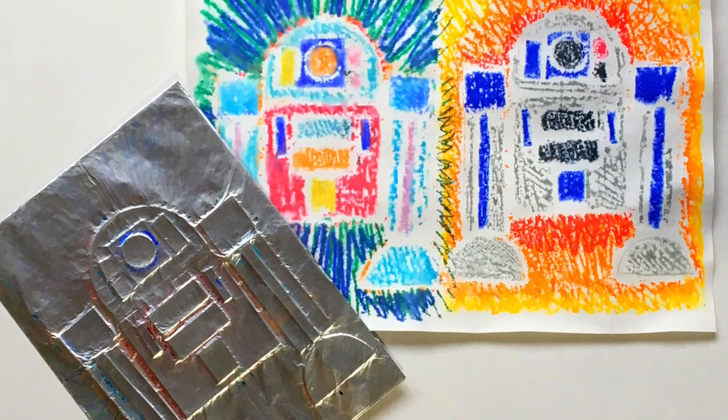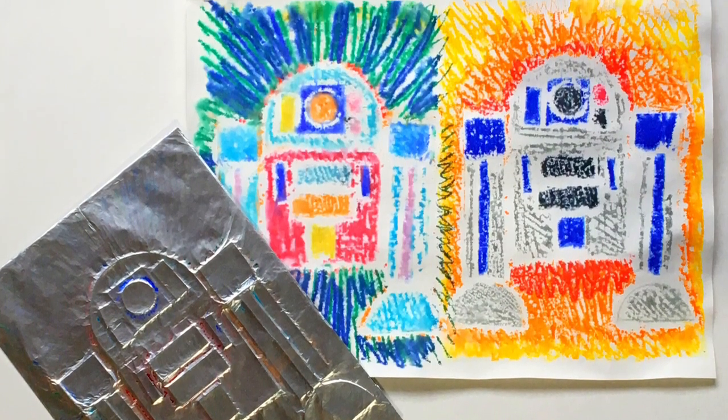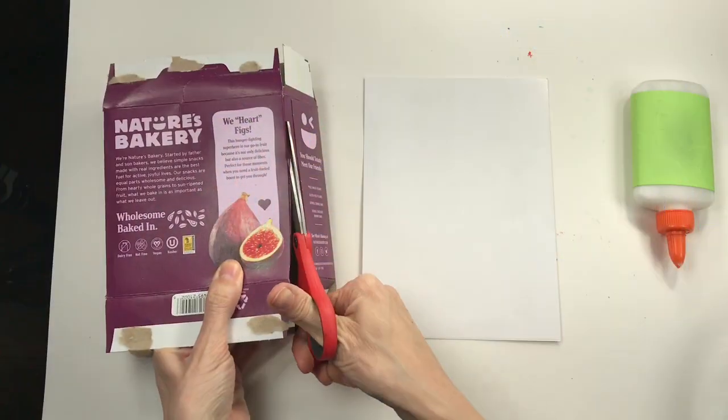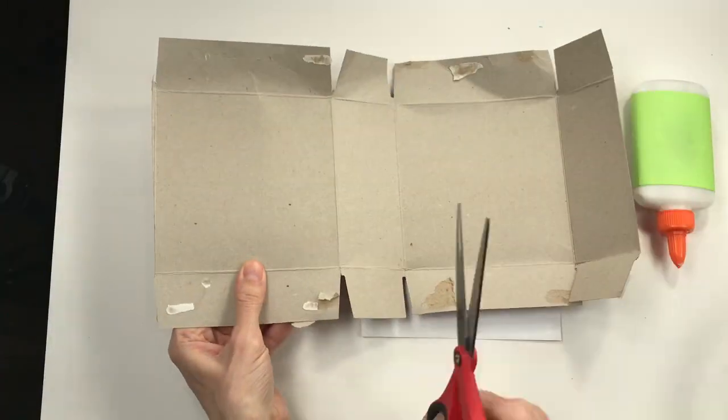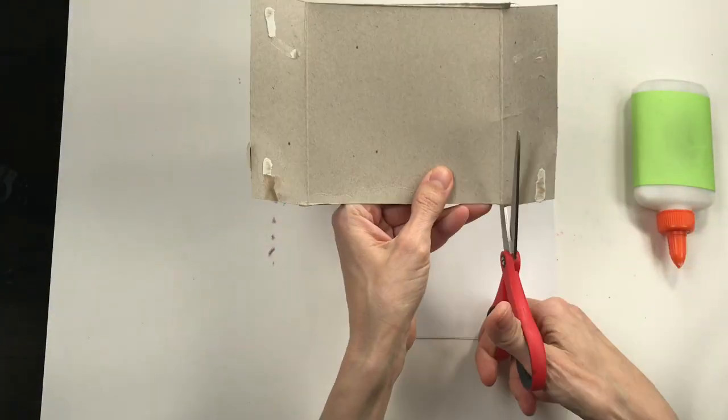Let's make an R2-D2 Colliograph print. All you're going to need is some cardboard like a cereal box, glue, scissors, aluminum foil, and markers.